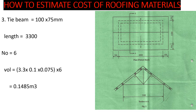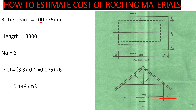Once done with the rafters, we proceed to the tie beam. The tie beam is size 100 by 75mm. The length of the tie beam equals the full span of 3300mm. There are 6 tie beams, one per truss. Volume = 3.3 × 0.1 × 0.075 × 6 = 0.1485 cubic meters.